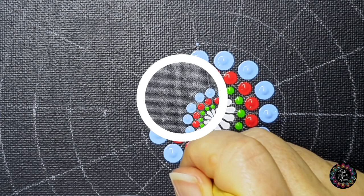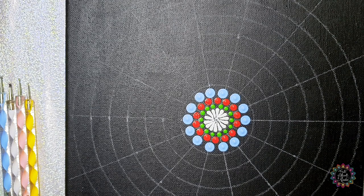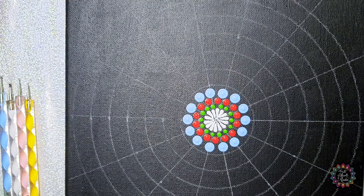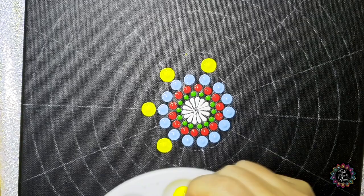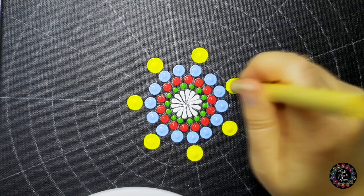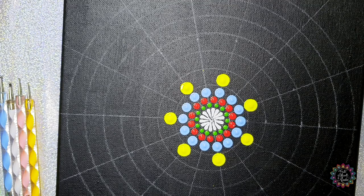Then we're going to take our 10 millimeter tool and in yellow we are going to dot every second straight line, so just keep count. So my yellow is a little bit transparent and that's why I'm just double dotting it so that we don't have that transparency when the paint dries.